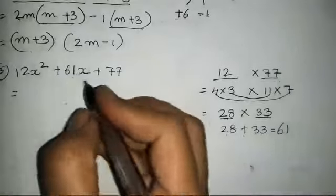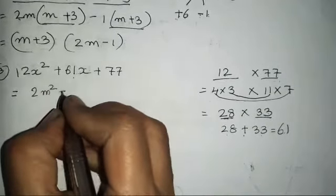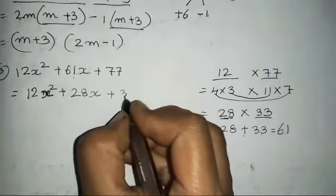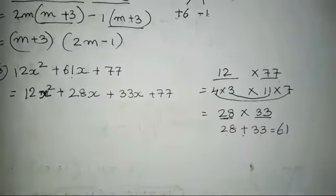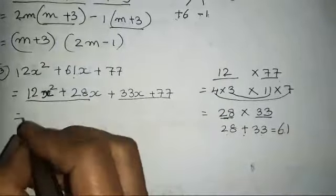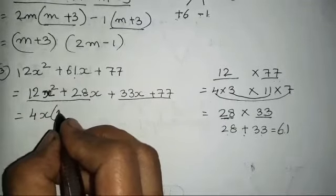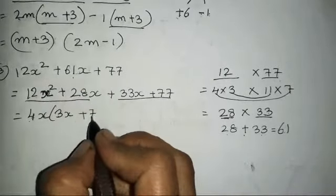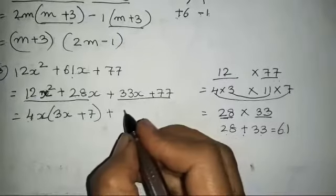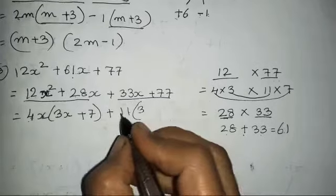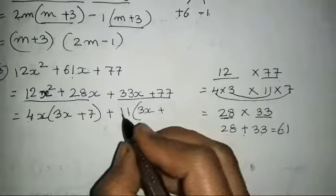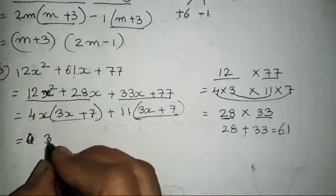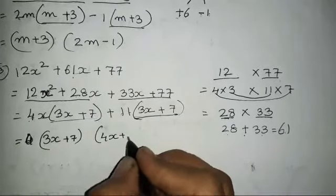Now replace 61x with 28x and 33x. So it is going to be 12x² + 28x + 33x + 77. Now place your brackets. Take 4x common: 4x(3x+7) - because 4×3=12 and 4×7=28. Now for the second part take 11 common: 11(3x+7) - because 11×3=33 and 11×7=77. So you have got the common bracket (3x+7) and the other one is (4x+11).